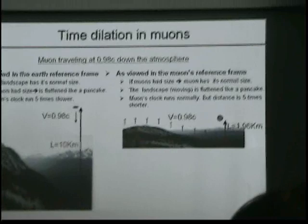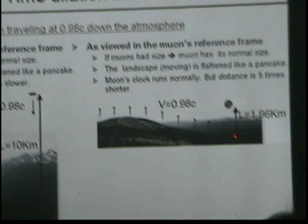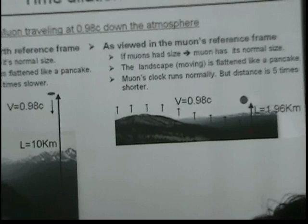And the muon clock, in its own reference frame, is going to run normally, because it's its own reference frame. The bottom line is that the muon, in this case, will travel two kilometers at a normal speed and a normal clock time, and it will decay at the base of the mountain.